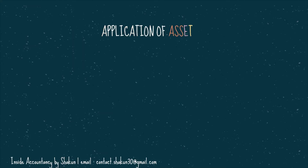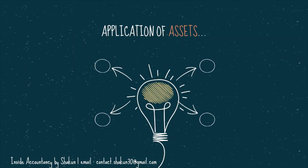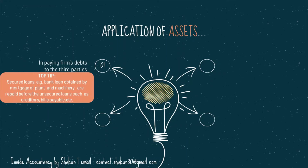Now let's talk about the application of assets. Assets of the firm, which may include amounts contributed by partners to make up any deficiencies of capital, are applied in the following order. First, assets are used in paying firm's debt to third parties. If the firm has to pay any amount to any third party, the assets of the firm are used. Please note that if there are any secured loans, such as a bank loan obtained by mortgage of plant and machinery, those are repaid before unsecured loans such as creditors and bills payable.